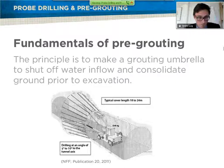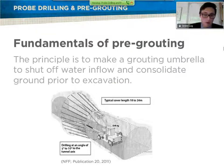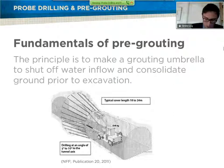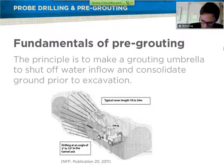The basic principle is to create a grouting umbrella in front of the tunnel. These are usually going 18 to 20 meters in front of the TBM. You want to hit discontinuities you have in front of the TBM and fill them with a pressure grout, to create the umbrella around so you can excavate into dry material.